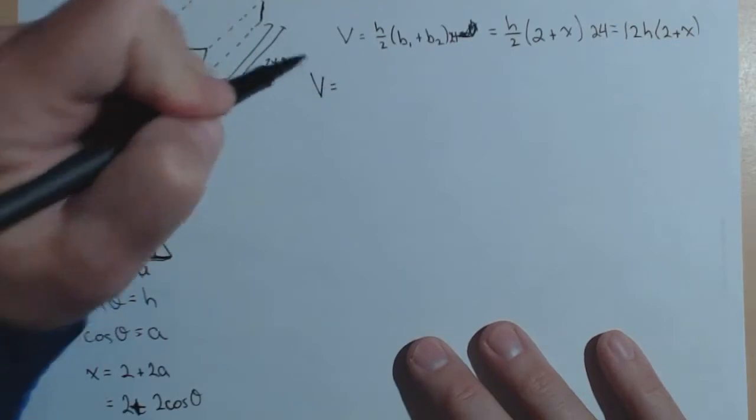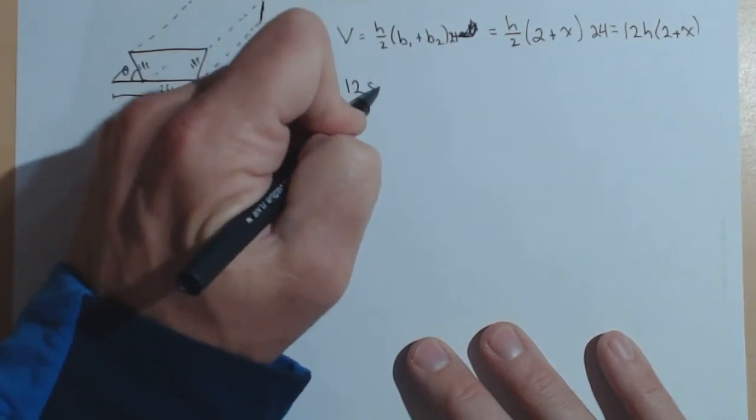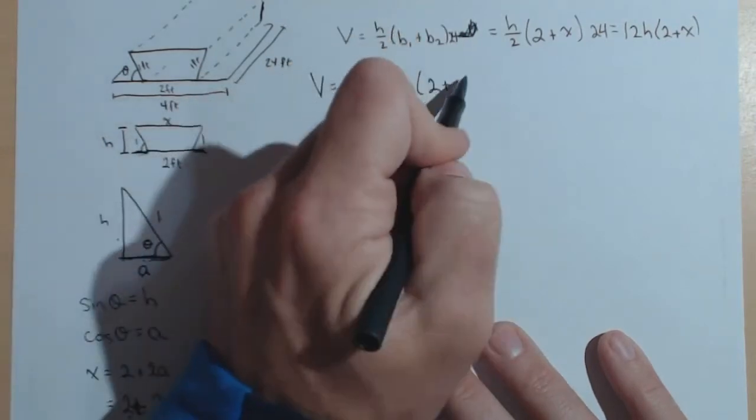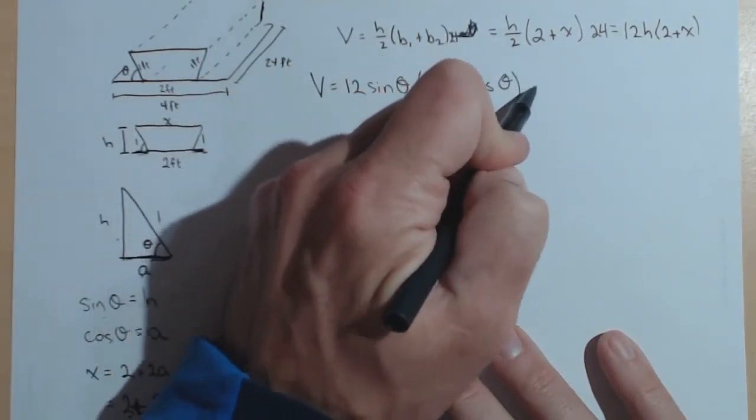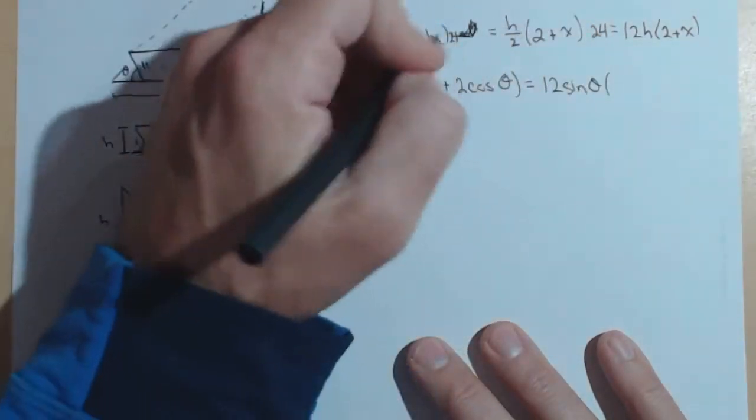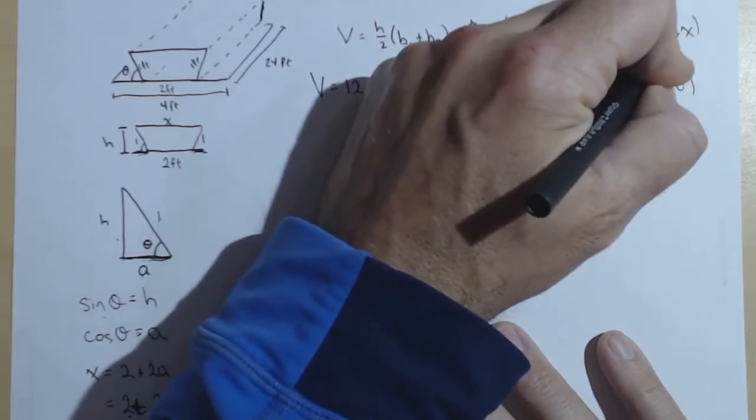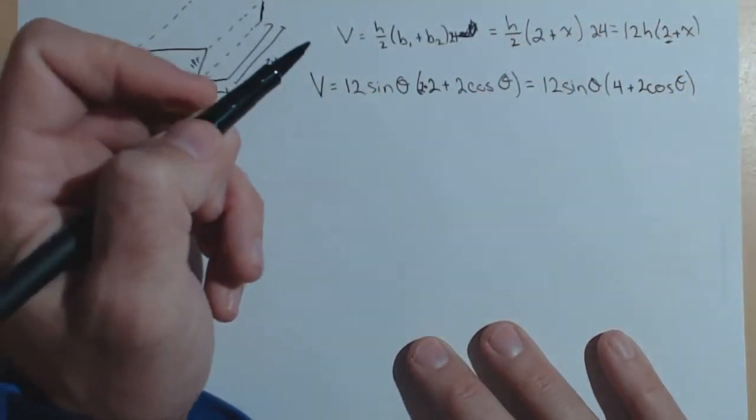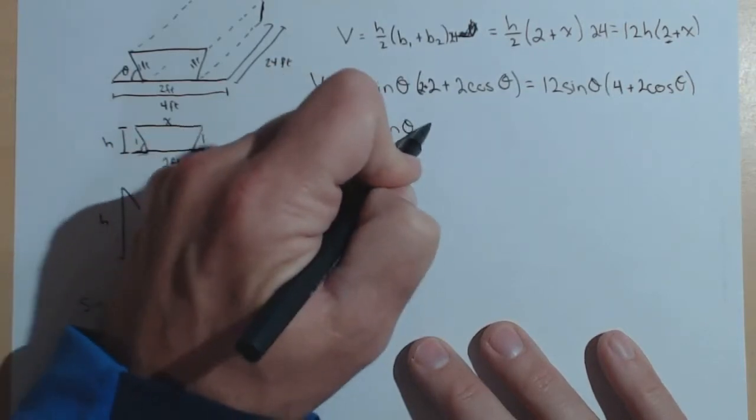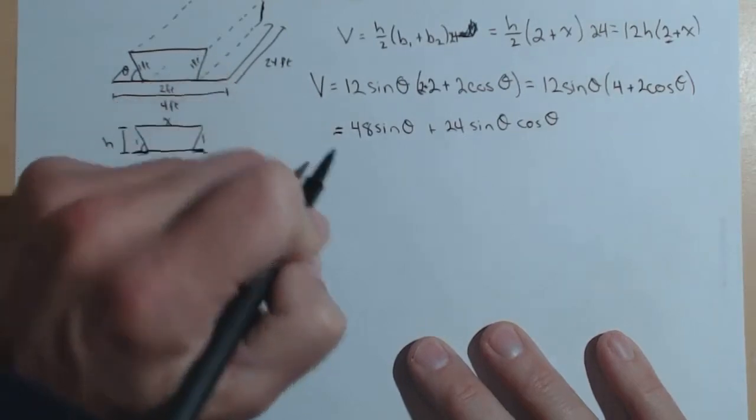Now we can get our volume in terms of theta. Here's my first substitution. I have 12 sine of theta, and now my other one, I'm putting this in for x. So times 2 plus 2 cosine of theta equals 12 sine theta, I'm missing a 2, 2 plus 4 plus 2 cosine of theta. I forgot this 2 here. Equals, I'm going to distribute this, and I've got 48 sine theta plus 24 sine theta cosine theta. And there is our volume as a function of theta.